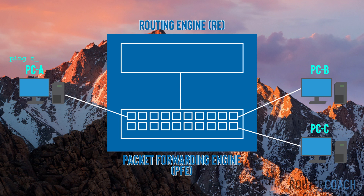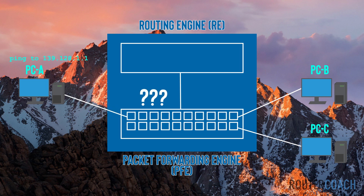For example, if PC-A is trying to ping a non-existent IP address which the PFE doesn't have in its routing table, the PFE is intelligent enough not to send this up to the routing engine, because this is not transit traffic passing through the device and there's no outgoing interface in the forwarding table. So the PFE can reply back to the source with a destination unreachable ping message.